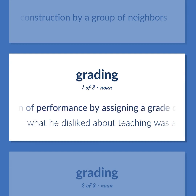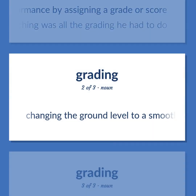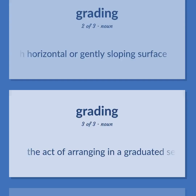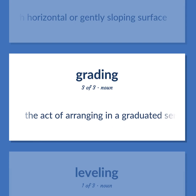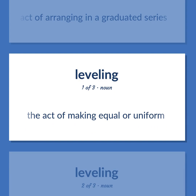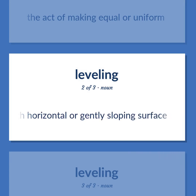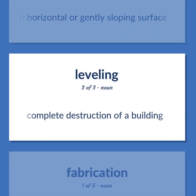Grading: evaluation of performance by assigning a grade or score — what he disliked about teaching was all the grading he had to do. Also, changing the ground level to a smooth horizontal or gently sloping surface. Leveling: the act of arranging in a graduated series. Equalization: the act of making equal or uniform. Grading: changing the ground level to a smooth horizontal or gently sloping surface. Razing: complete destruction of a building.